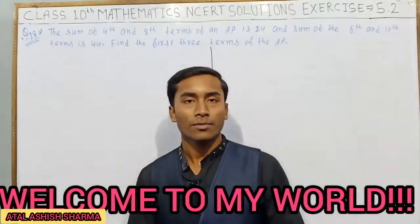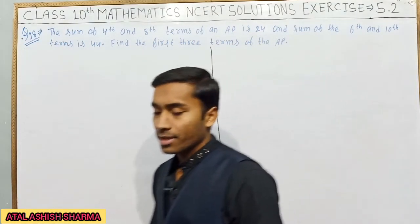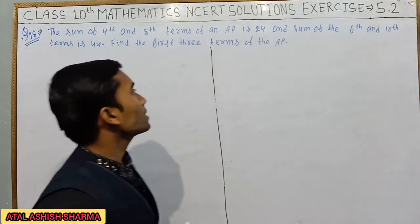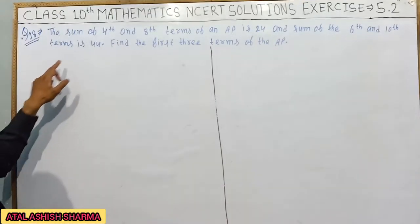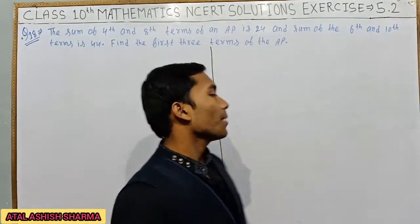Hello everyone, I am Atalai Sarman and welcome to my channel. The next question is question number 18. The sum of 4th and 8th terms of an AP is 24 and sum of the 6th and 10th terms is 44. Find the first 3 terms of the AP.